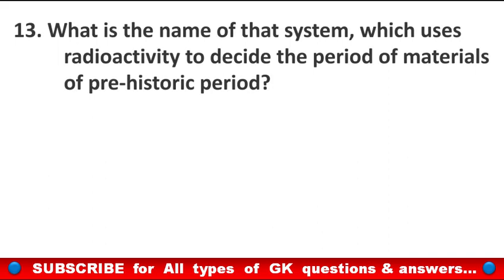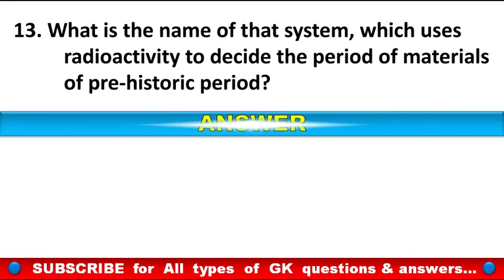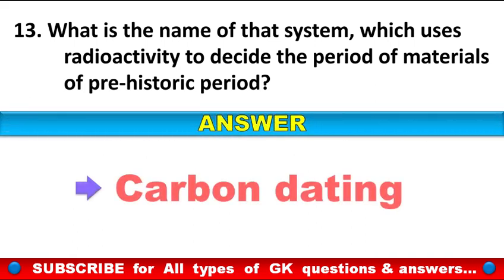What is the name of the system which uses radioactivity to determine the age of materials from prehistoric periods? Answer: Carbon dating.